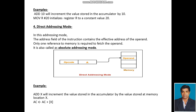Direct Addressing Mode: In this addressing mode, the address field of the instruction contains the effective address of the operand. Only one reference to memory is required to fetch the operand. It is also called Absolute Addressing Mode.